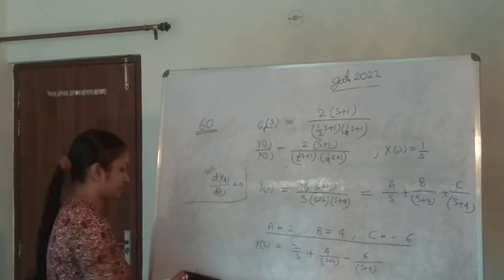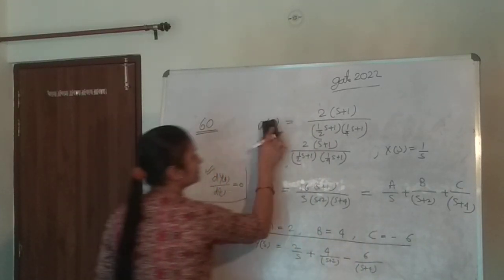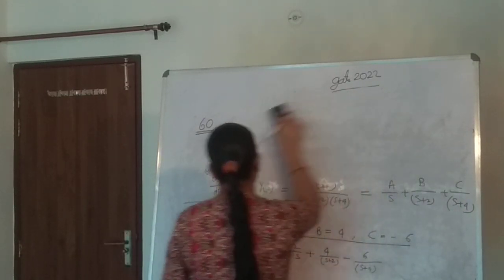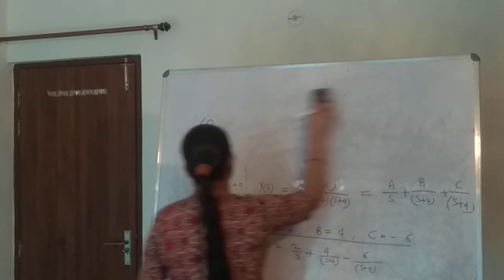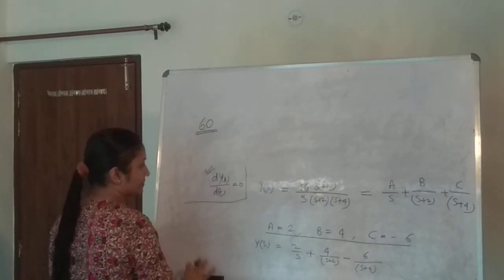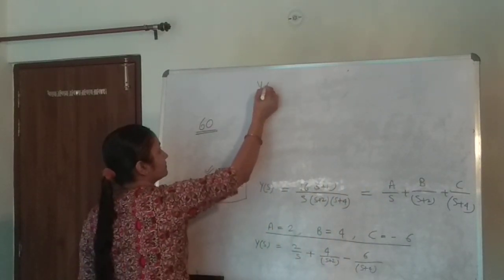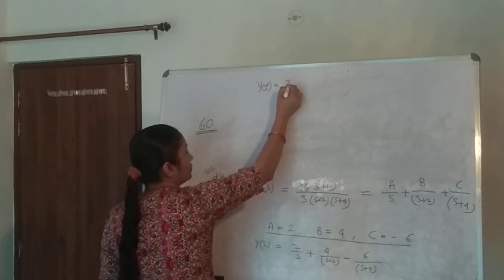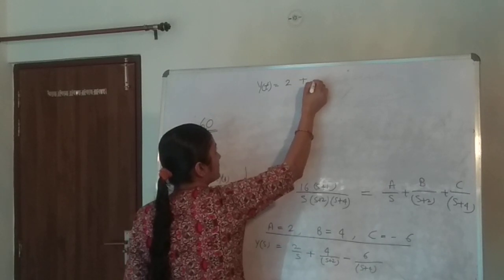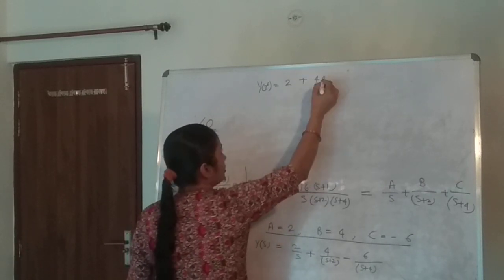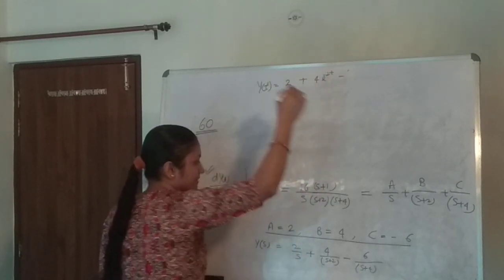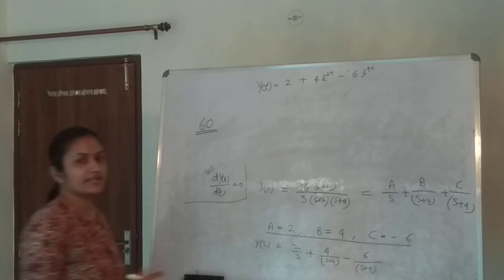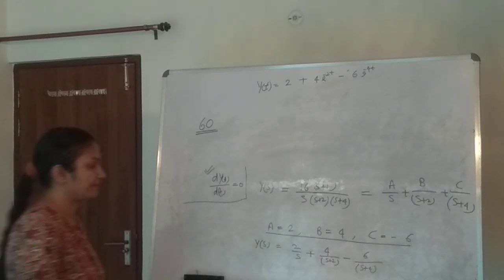Now take the inverse Laplace of this. This becomes y(t) equals 2 plus 4 times e to the power minus 2t minus 6 times e to the power minus 4t, as 1/(s+A) is nothing but e to the power minus At.